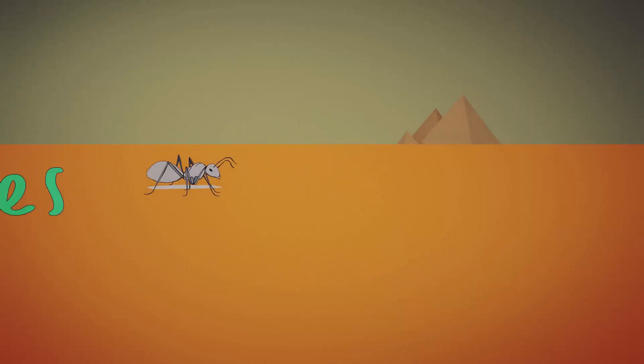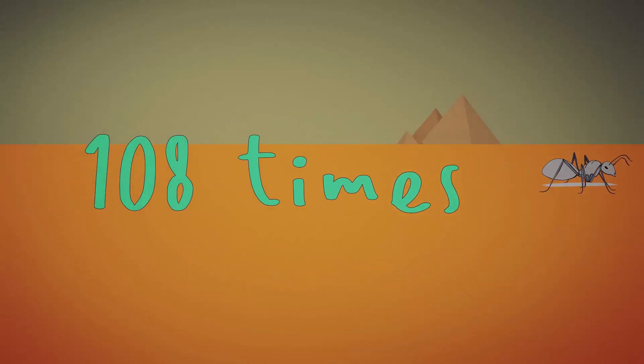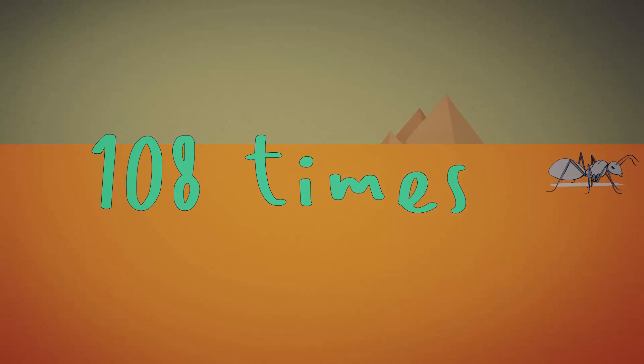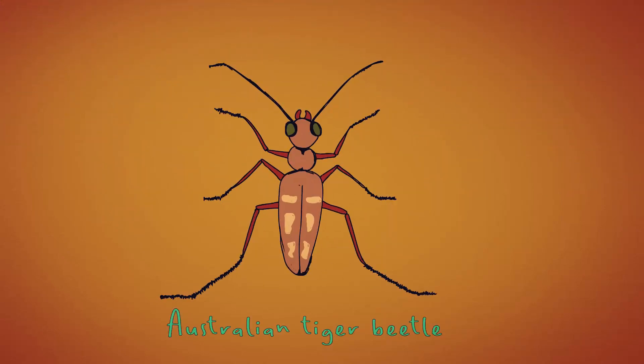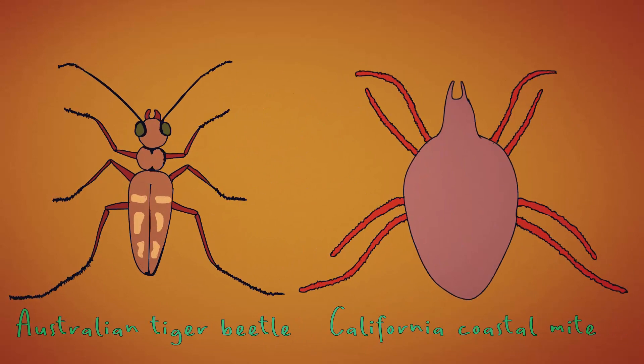It can travel a length of 108 times its own body length per second, a feat topped only by two other creatures: the Australian tiger beetle, Cicindela iberniola, and the California coastal mite, Paratarsotomus macropalpis.